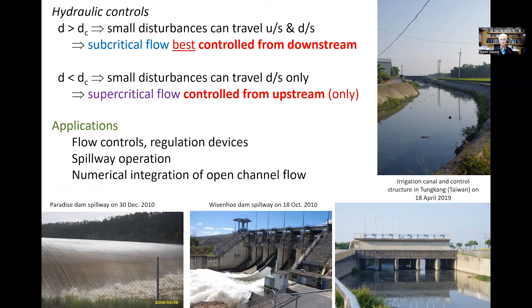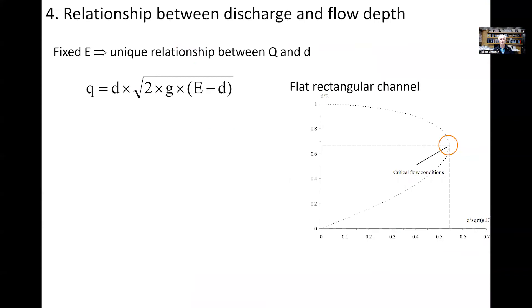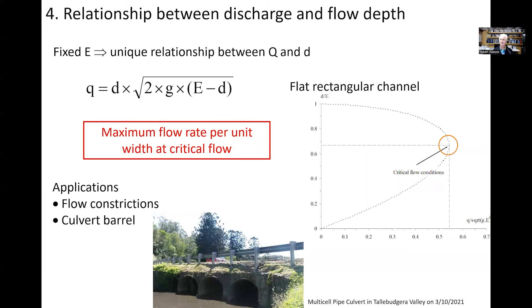Let us look at the relationship between discharge and water depth for a fixed specific energy. We obtain a relationship between unit discharge q and water depth, plotted with the vertical axis being the dimensionless water depth d/E and the horizontal axis being the dimensionless unit discharge. We find in particular that maximum unit discharge occurs at critical flow conditions. A relevant application is flow constriction or culvert barrels, typically designed at the optimum design discharge to achieve critical flow condition.